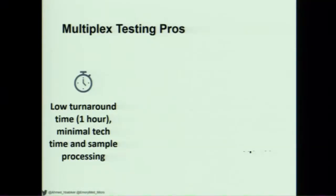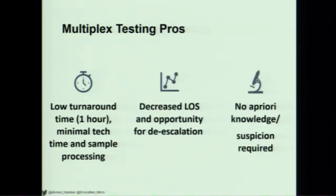With these panels and this testing, you can have very fast results — from time of sample collection, within an hour to an hour and a half. With quick turnaround times, there's decreased length of stay potentially, and lots of opportunities for de-escalation. Once you have answers, you can start peeling back broad spectrum antibiotics. There's also no specific a priori knowledge needed — if you know a patient has pneumonia but not what type, you can potentially get the answer without knowing exactly how to test.